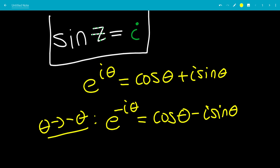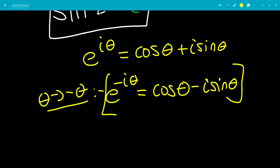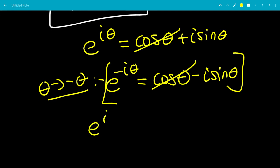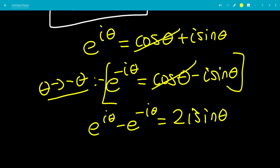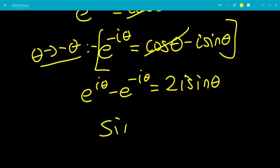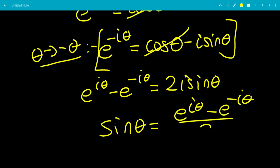We want to solve for sine theta. Subtracting the second equation from the first, cosine theta and cosine theta cancel. We have e to the i theta minus e to the minus i theta equals 2i sine theta, and now we can divide by 2i. So we get sine theta equals e to the i theta minus e to the minus i theta, all over 2i.